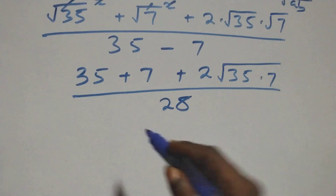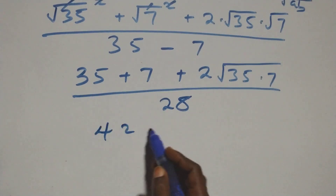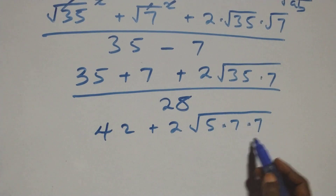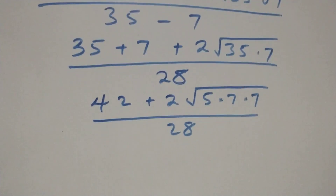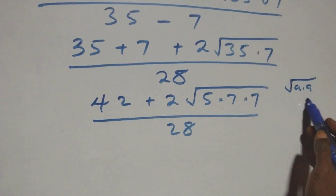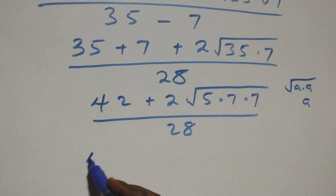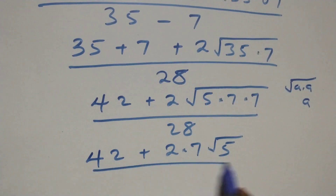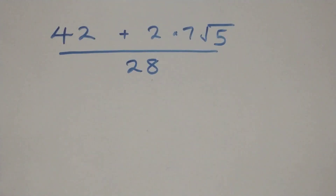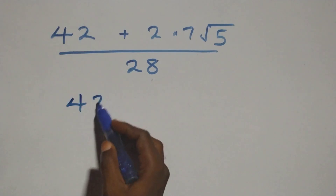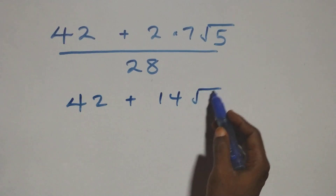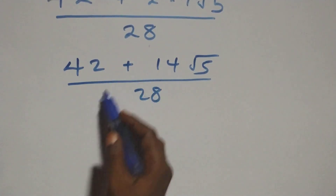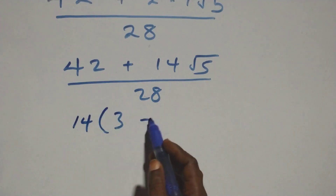We have 35 plus 7, which is 42, plus 2 times the square root of 35 times 7, which is root of 5 times 7 times 7, written as 5 times 7. Using root a times root a equals a, we have root 7 times root 7 equals 7, so the cross term becomes 2 times 7 times root 5. This gives us 42 plus 14 root 5 over 28.